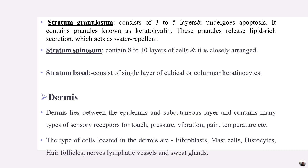Stratum spinosum contains eight to ten layers of cells that are closely arranged to each other. Stratum basale consists of a single layer of cuboidal or columnar keratinocyte cells.